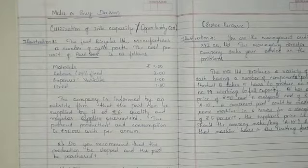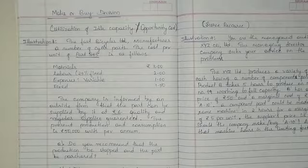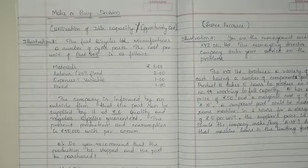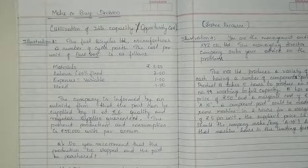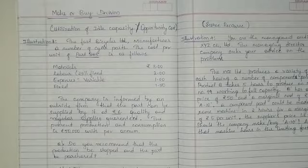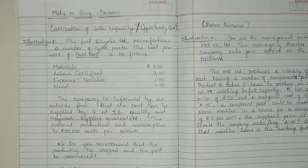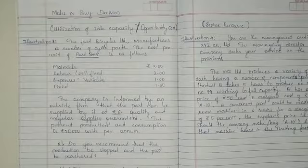The next concept is make or buy decision. Management usually takes many decisions based on managerial costing, and make or buy decision is one important concept to understand. It generally means the company has the opportunity to purchase a particular product from an outsider or produce the same product by itself. By considering the cost of producing versus purchasing, management takes a decision.